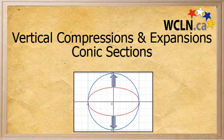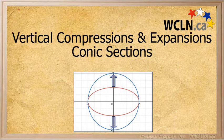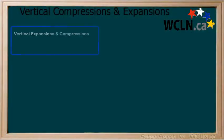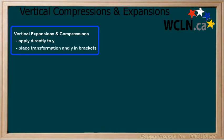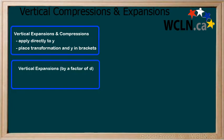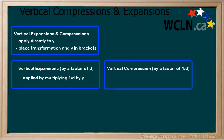In this tutorial, we will be learning about vertical compressions and expansions being applied to conic sections. When applying a vertical compression or expansion to a conic section, it should be applied directly to y, making sure to place both the transformation and y in brackets. Expansions are applied as a fraction: an expansion by a factor of d would be applied as 1 over d multiplying the y. Compressions are the reverse: a compression by a factor of 1 over d would be applied as d multiplying y.